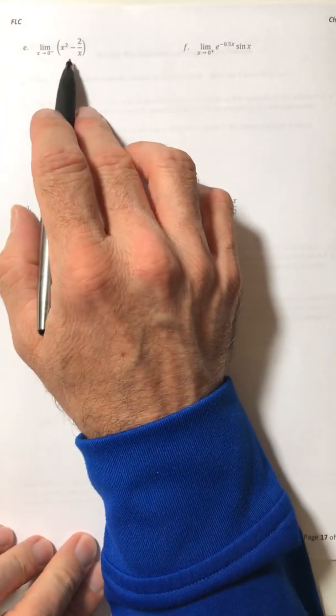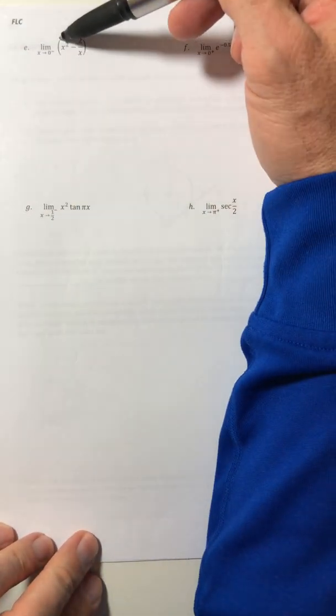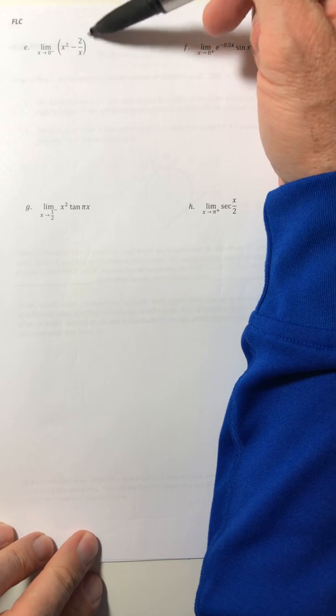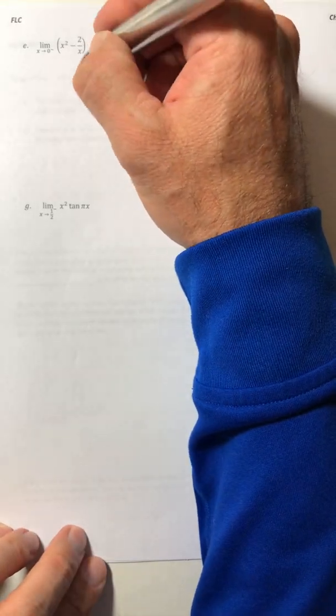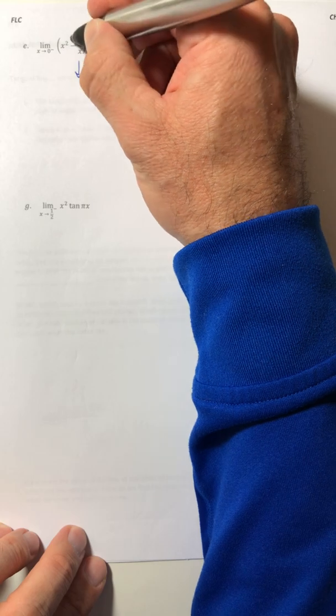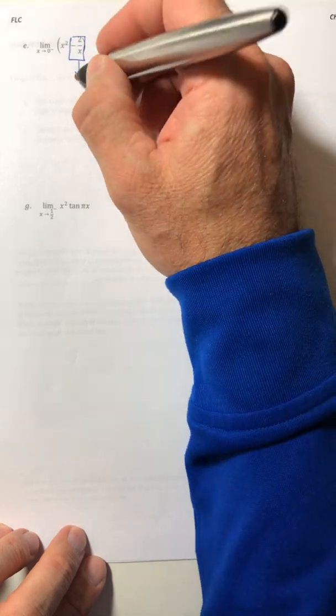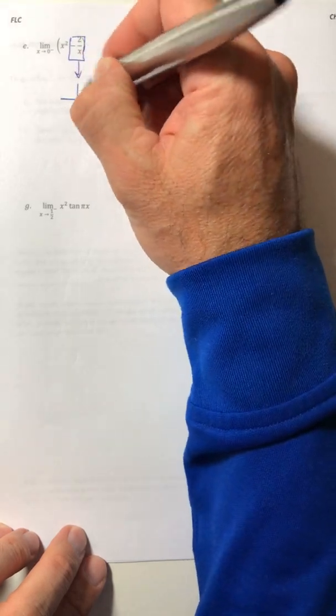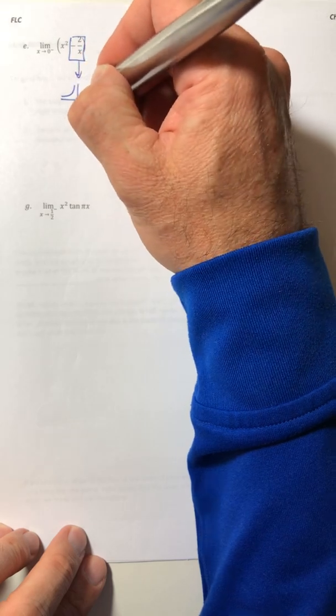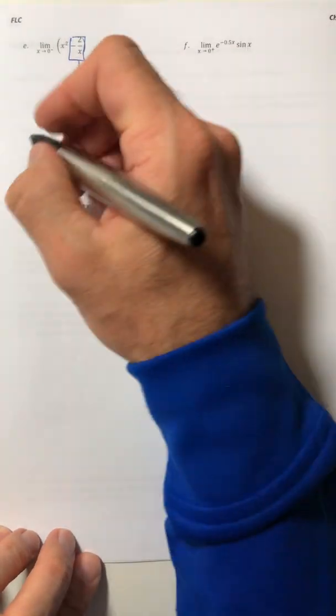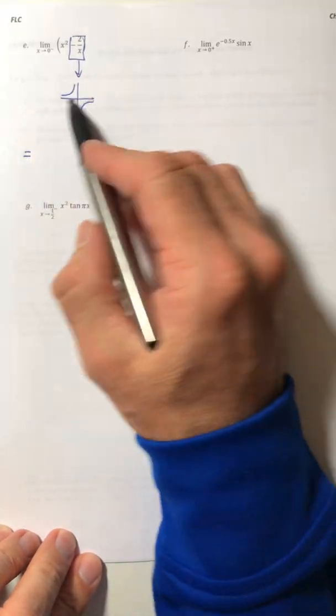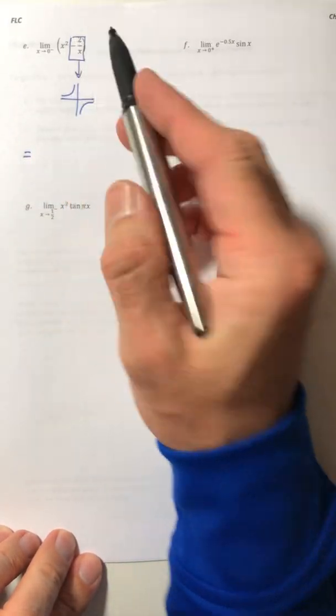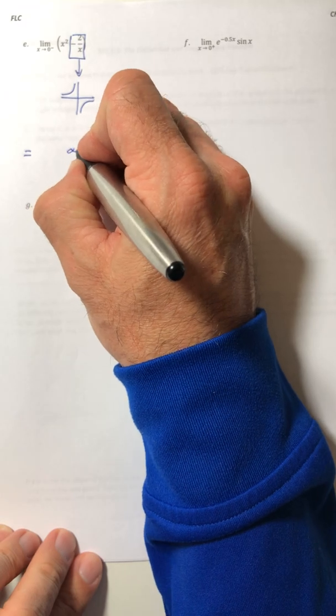So like for example e, the x squared is not the problem, it's the 2 over x. So let's just look at the negative 2 over x. So if you graphed it, the graph would go like that. So as you approach zero from the left, that would be on this side and it's coming up to infinity, positive infinity.